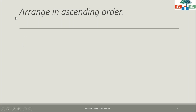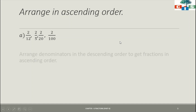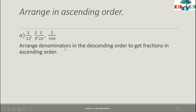Now we will start with question number 4 of exercise 6.3 — arrange in ascending order. The first question we have is 2/12, 2/5, 2/20, and 2/100. We have to arrange this set of fractions in ascending order. Ascending order means from smallest fraction to largest fraction. Here we can see that all the numerators are the same, so we can arrange them without converting to like fractions. We have to take the denominators and arrange them in descending order.